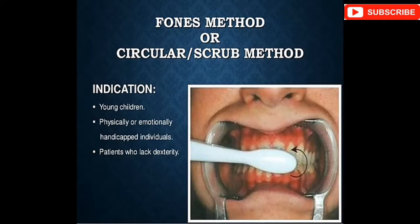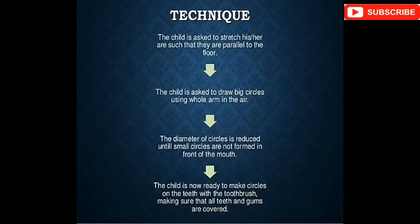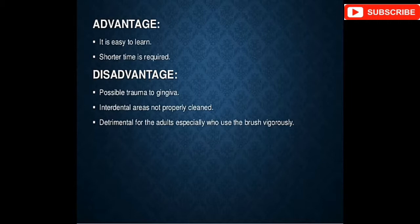The Fones method or circular scrub method is indicated for young children, physically or emotionally handicapped individuals, or patients who lack dexterity. The technique: the child stretches their arm parallel to the floor and draws big circles using the whole arm, gradually reducing the diameter to small circles. Advantages: learned in shorter time. Disadvantages: possible trauma to the gingiva, interdental areas not properly cleaned, and detrimental for adults.